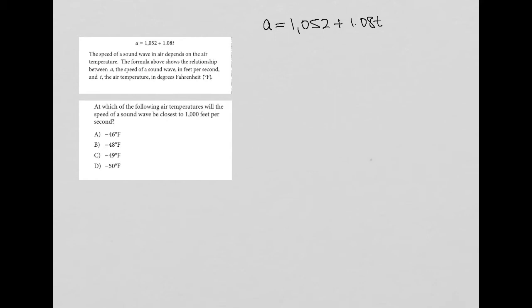The actual question says which of the following air temperatures—so we know all of these are T values—will the speed of a sound wave, that's A (because we were told that A is the speed of a sound wave), be closest to 1,000 feet per second? So we're looking for A to be just about 1,000 feet per second.